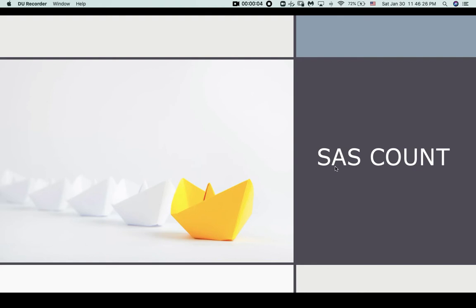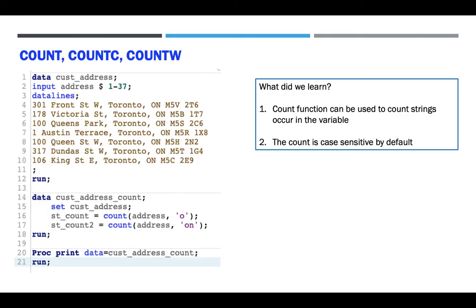In this presentation I will give you an introduction to the SAS COUNT function. The SAS COUNT function actually has three different functions: one is to count the substring, simply called COUNT; the second one is COUNTC, which counts characters; and the last one is COUNTW, which counts words. Let's take a look at some examples.